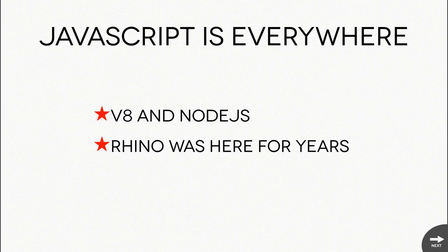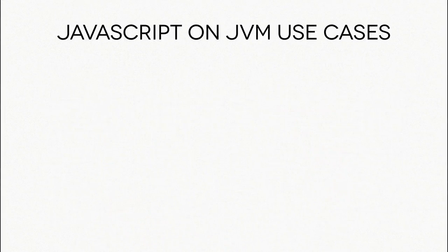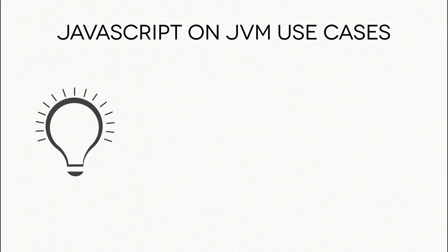As Java developers we might know about Rhino. Rhino was developed by Mozilla and was one of the first implementations of JavaScript - many old browsers were also written in Java, which is where Rhino came from. Now Rhino has become Nashorn. Two years ago at JavaOne, Oracle announced they were working on a JavaScript engine called Nashorn.